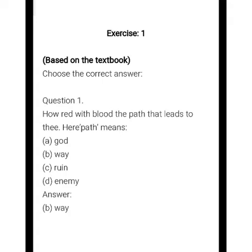First question: 'How red with blood the path that leads to...' — the word 'path' means what? There are four options: God, way, ruin, and enemy. The answer is 'way', because path means रास्ता and the English word for रास्ता is 'way'.